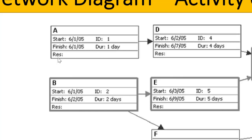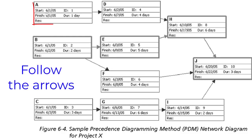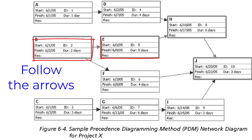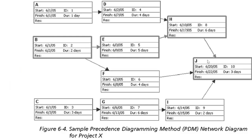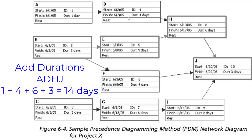If we wanted to, we might also list the resources required for a specific activity. Going through this network diagram again, there are a number of different paths. The first is A, D, H, and J; the next is B, E, H, and J; then B down to F and then J; and along the bottom C, G, I, and J. We can add up how long each path will take — for example A, D, H, and J is one day plus four days plus six days plus three days, so 1 + 4 = 5, + 6 = 11, + 3 = 14 days.